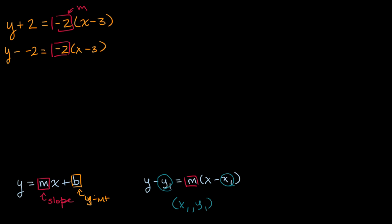And if I were to ask you to give me a point that sits on this line, you could say x₁ would be three and y₁ would be negative two. This point sits on the line — it's not the y-intercept, but it's a point on the line, and we know the slope is negative two.